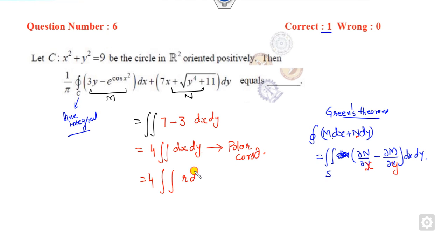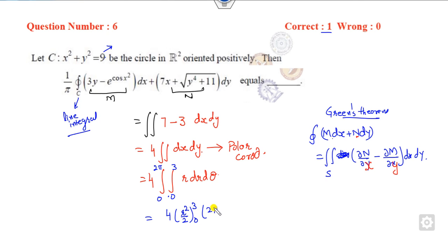To make the calculation easier, convert to polar coordinates: r dr dθ. This is a circle with radius 3, so θ goes from 0 to 2π and r from 0 to 3. Integrating gives 4 times 2π times (9/2), which simplifies to 8 times 2π = 16π. Wait — working through it: 4 × (9/2) × 2π = 36π... the result simplifies to 36π, but comparing: the right answer is 36π.